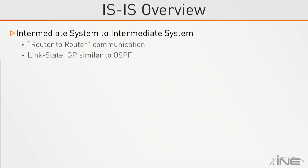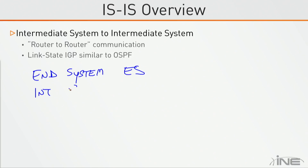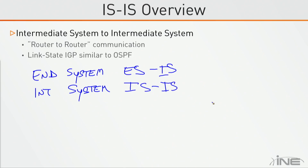Originally, there were two types of systems: the end system, or ES, and the intermediate system, or IS. There were two different protocols—ES-IS, which was between the host and the router, and IS-IS, which is the router-to-router protocol. IS-IS is what we're talking about, which is basically the routing protocol, the IGP.